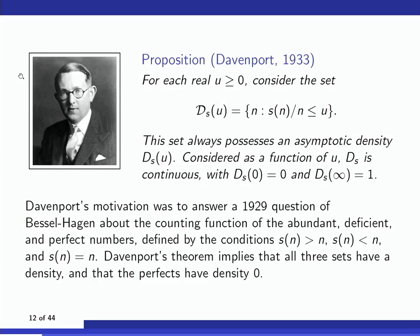The second part of the proof relies on a theorem of Harold Davenport from 1933. For every real u ≥ 0, let script D_s(u) be the set of all n where s(n)/n is below u. Davenport's theorem is that this set always possesses an asymptotic density, which is a continuous function of u. It's easy to see that the density is zero at u = 0 — s(n)/n is only zero when n = 1 — and Davenport proved the density goes to 1 as u → ∞.